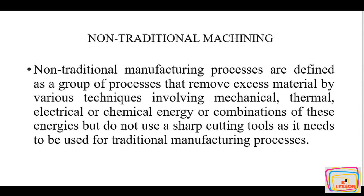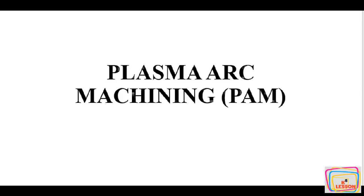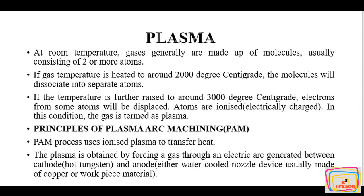Now, coming to our topic of plasma arc machining, but before discussing it, we will discuss what plasma is. At room temperature, gas is generally made up of molecules, usually consisting of two or more atoms. If the gas temperature is heated to around 2000°C, the molecules will disassociate into separate atoms. If the temperature is further raised to around 3000°C, the electrons from some atoms will be displaced, atoms are ionized and get electrically charged. In this condition, the gas is termed plasma.